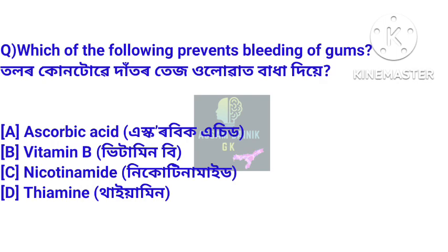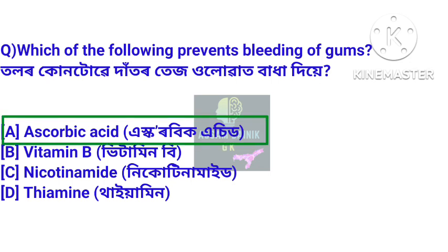Which of the following prevents bleeding of gums? Toler kuntwe dator tes luat badhatiye. Answer: ascorbic acid. Ascorbic acid e dator pura tes luat badhatiye.